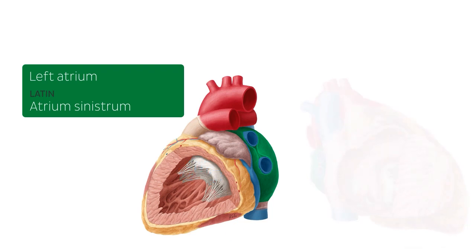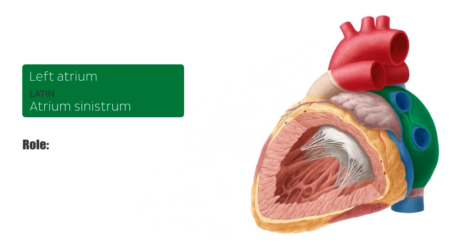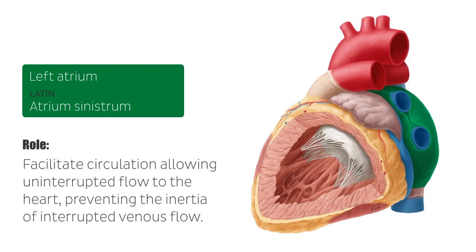There are a few roles I would like to add associated with the left atrium. The atria in general of the heart — atria meaning the plural of atrium — will be facilitating circulation primarily by allowing uninterrupted venous flow to the heart, preventing the inertia of interrupted venous flow that would otherwise occur at each ventricular systole.